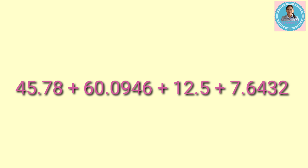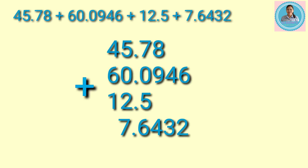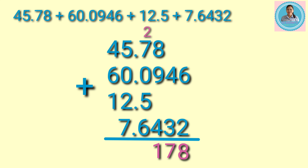Last, let's answer this problem. Let's arrange the numbers in columns, aligning the decimal point and the digits according to their place value — this is the proper arrangement. Now let's add from right to left: 6 plus 2 equals 8, then 4 plus 3 equals 7, then 8 plus 9 plus 4 equals 21 — bring down 1, carry 2.